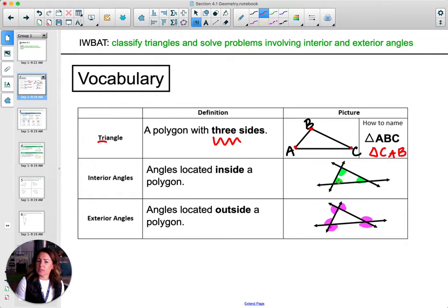Interior angles are just the angles inside of the triangle. Exterior angles are basically outside angles. If you extend the side of the triangle, they're the one that makes a linear pair with the inside. So the linear pair with it is its exterior angle.